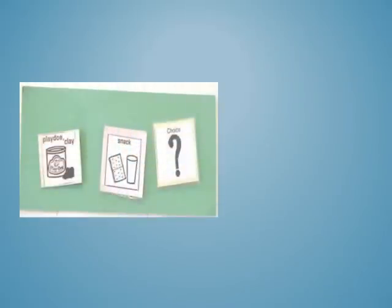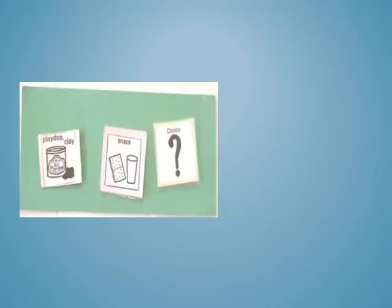As your learner uses a schedule throughout the day, they should be manipulating it in some way to show that it is changing as activities are completed — removing the symbols, turning them over, or crossing them off to indicate activities are finished. In this three-picture example, the learner first plays with Play-Doh, then goes to snack, then gets a choice. After Play-Doh time is over, you show the schedule to the learner, have them remove that picture and give it to you or put it in an envelope, indicating that activity is done. The next picture shows snack time, and after that, they get to make a choice.